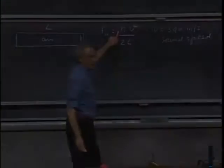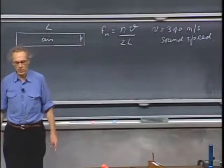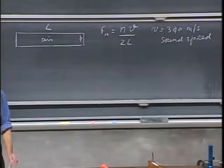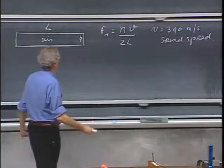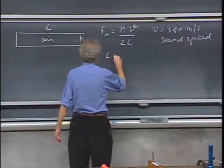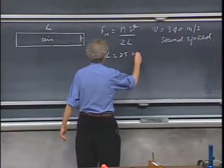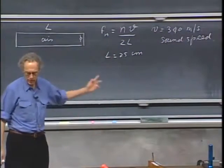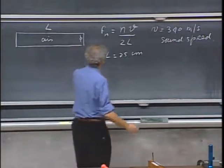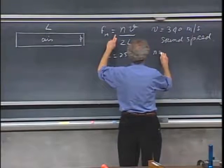Notice it's again linear in N. In other words, if an instrument produces a certain frequency, let us say that L equals 25 centimeters, then you can calculate the frequency F1. You know what the speed of sound is, 340. So we take N equals one.